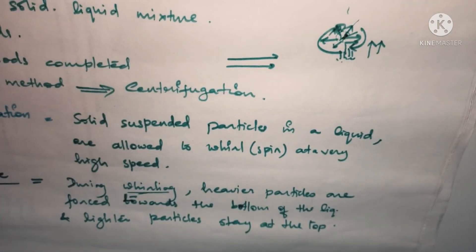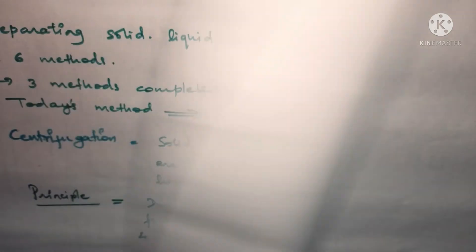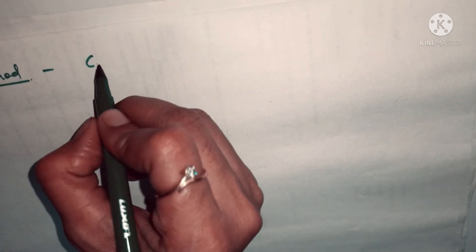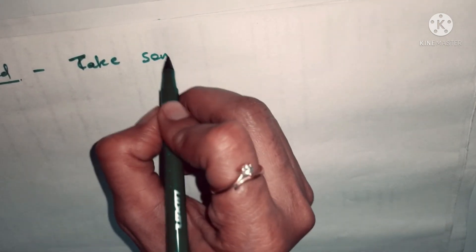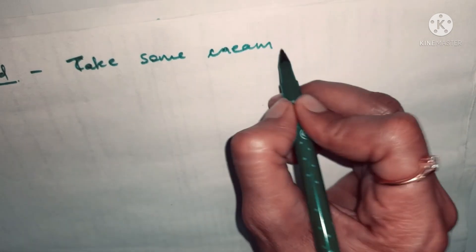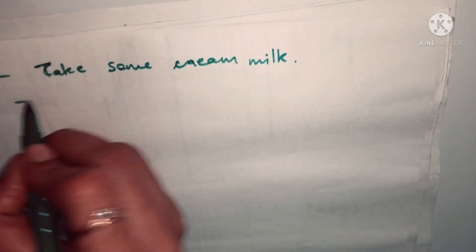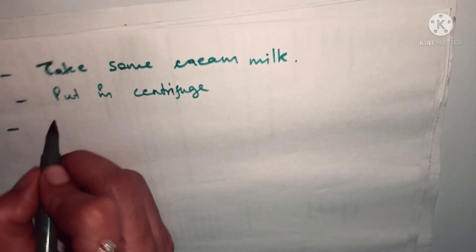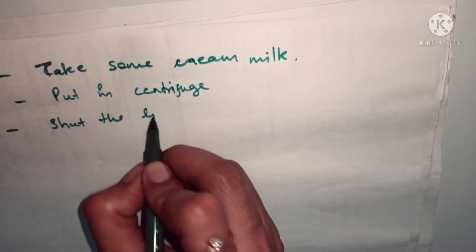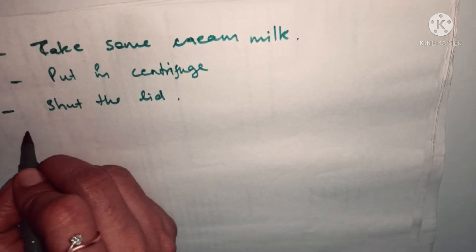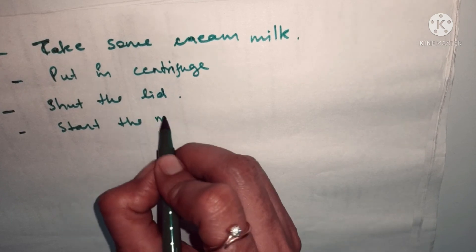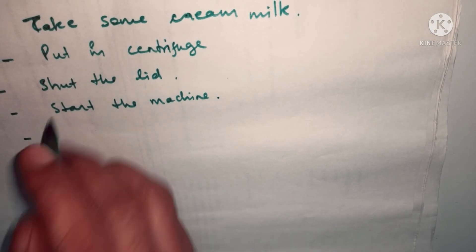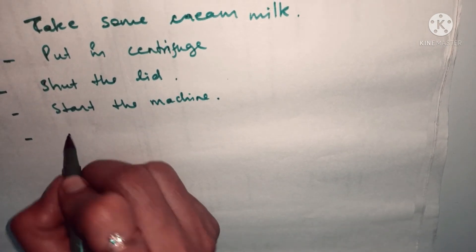If you want to write the method in steps: first, take some cream milk and put it in the centrifuge. Then shut the lid and start the machine.